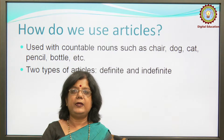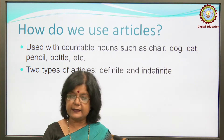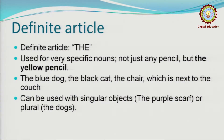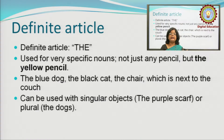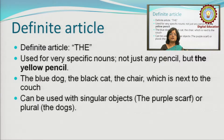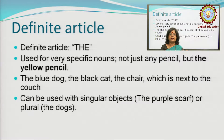One section will be under the category of definite article and the other will be indefinite article. The definite article is 'the.' It is used for very specific nouns — to symbolize a special person, commodity, or issue. Not just any pencil, but the yellow pencil. If we say 'I write with a pencil,' it can be any pencil, but when I say 'I write with the yellow pencil,' it is specified — there is a particular pencil with which I am writing.